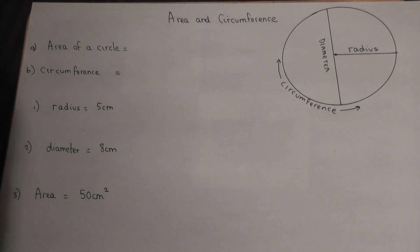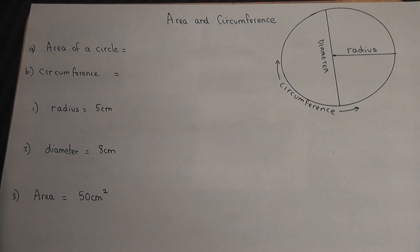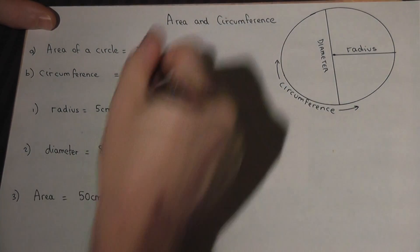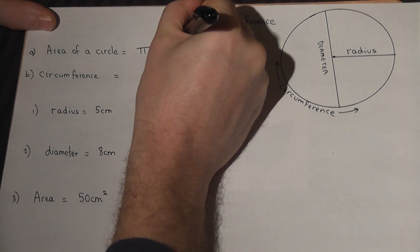This video is a concise review of two key formulas for circles. If you want the area of a circle, the key formula is π times radius squared, or πr².